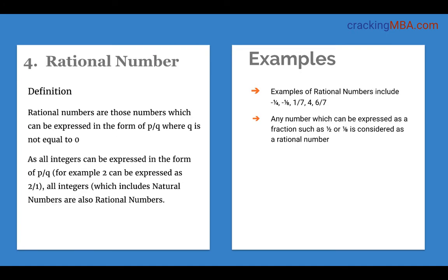Next is the rational numbers. Rational numbers include all those numbers which can be represented in the form of P by Q where Q is not equal to 0. So all integers naturally become rational numbers because every integer can be represented in the form of P slash 1 or P by 1. For example, 2 is an integer and it is also a rational number because it can be expressed as 2 by 1.